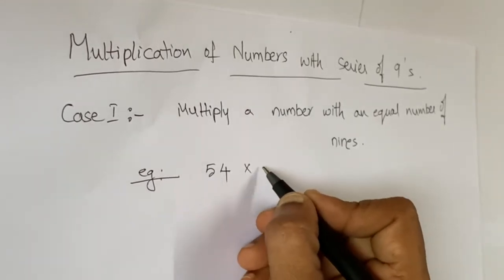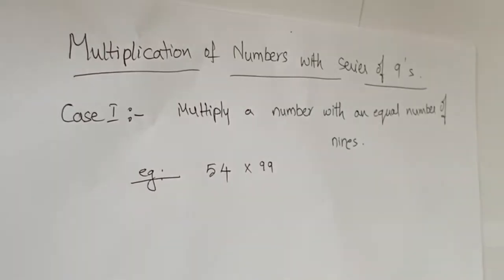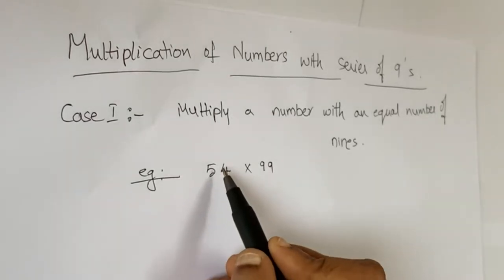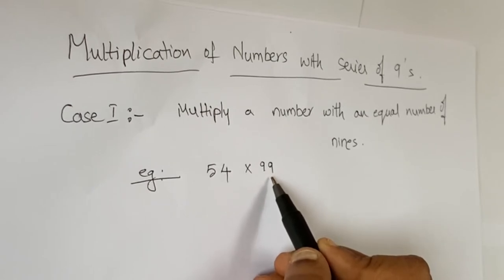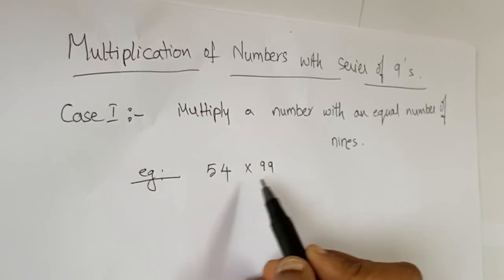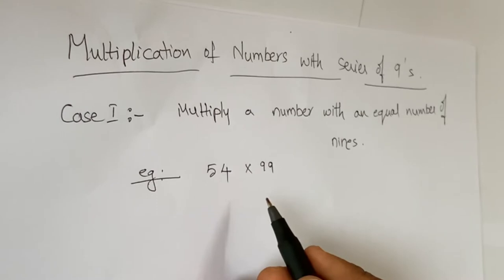54 multiplied by 99. So here the number 54 contains two digits, the series of nines is also two. So this is the first case.